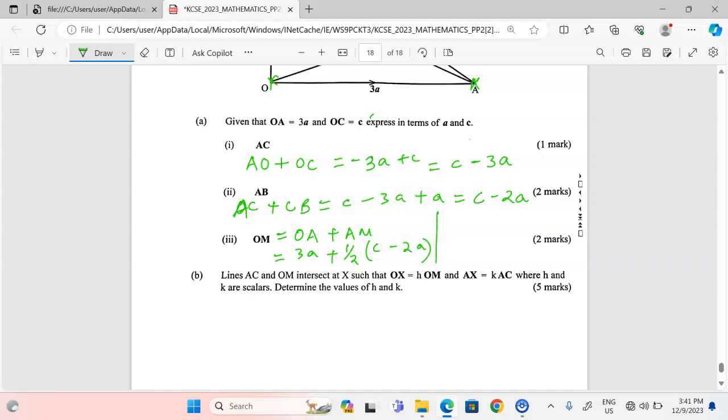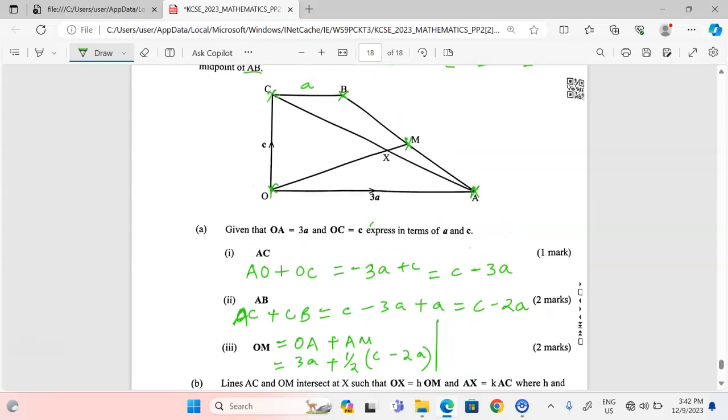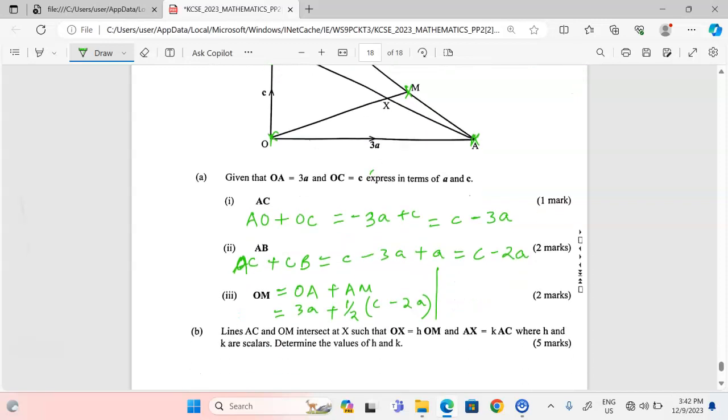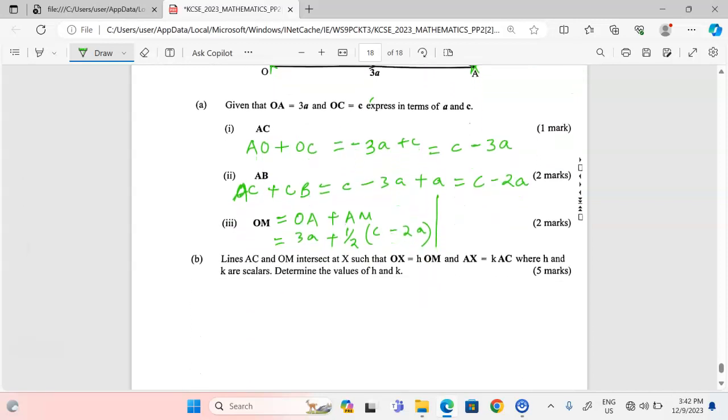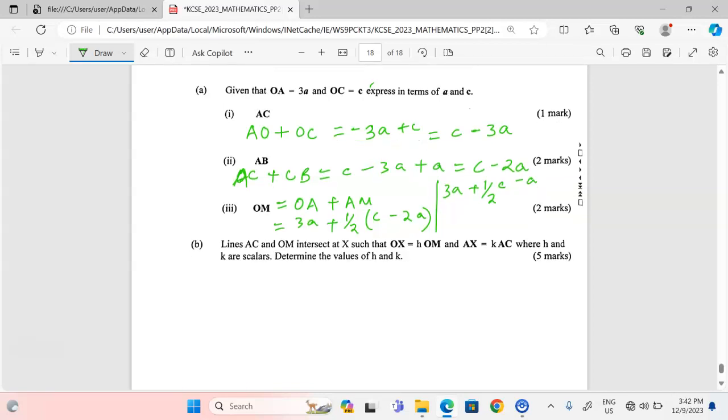Vector AM equals half vector AB, which is already up there, so c minus 2a. Because M is the midpoint, which means AM is half of AB. Therefore we can talk of 3a plus half vector (c minus 2a). When we multiply half by 2a, we get negative a. Therefore, now we can group and have 2a plus half vector c.